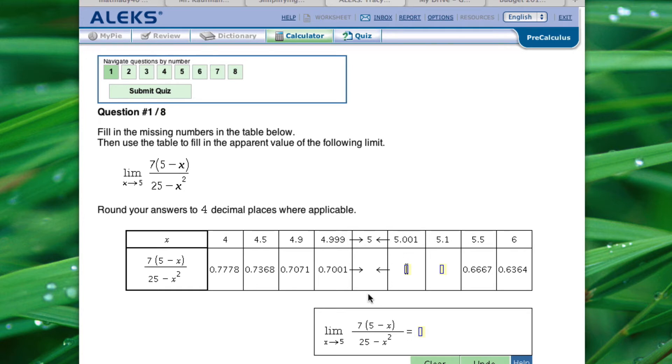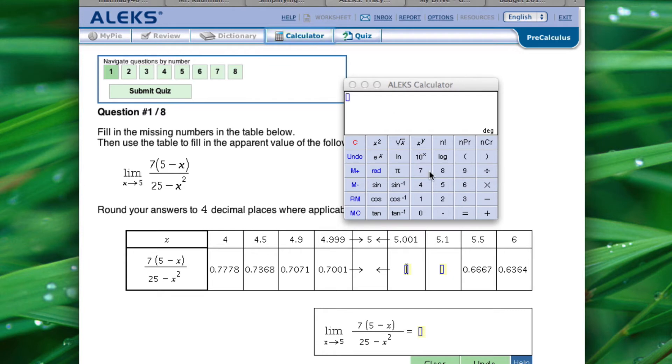So what we're going to do is basically just plug that into the calculator. We're going to use this formula. So 7 times the quantity of 5 minus 5.1, close parenthesis. We're going to divide all of that by 25 minus 5.1 squared. And so that looks like this formula here. So we're going to click equals.